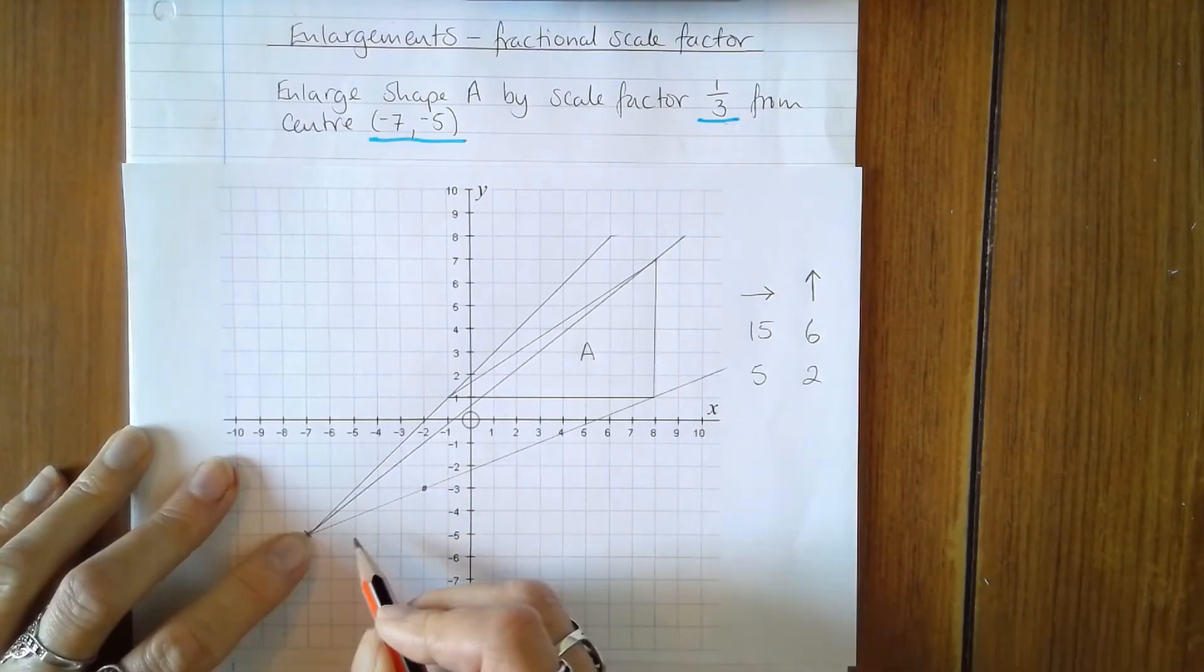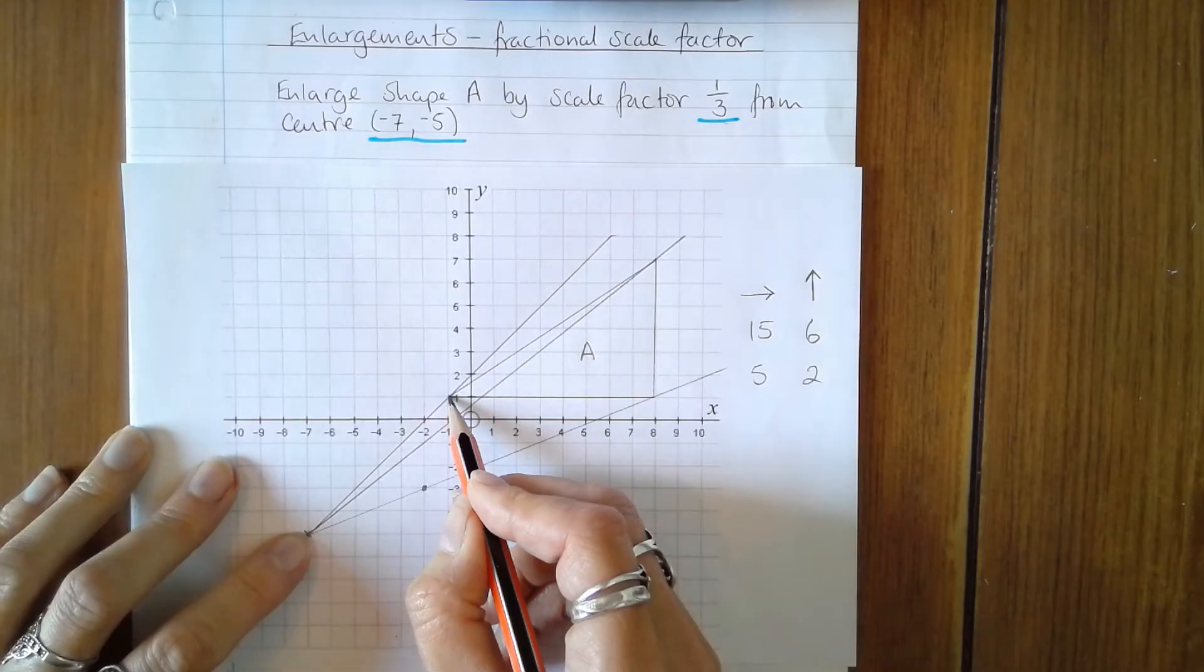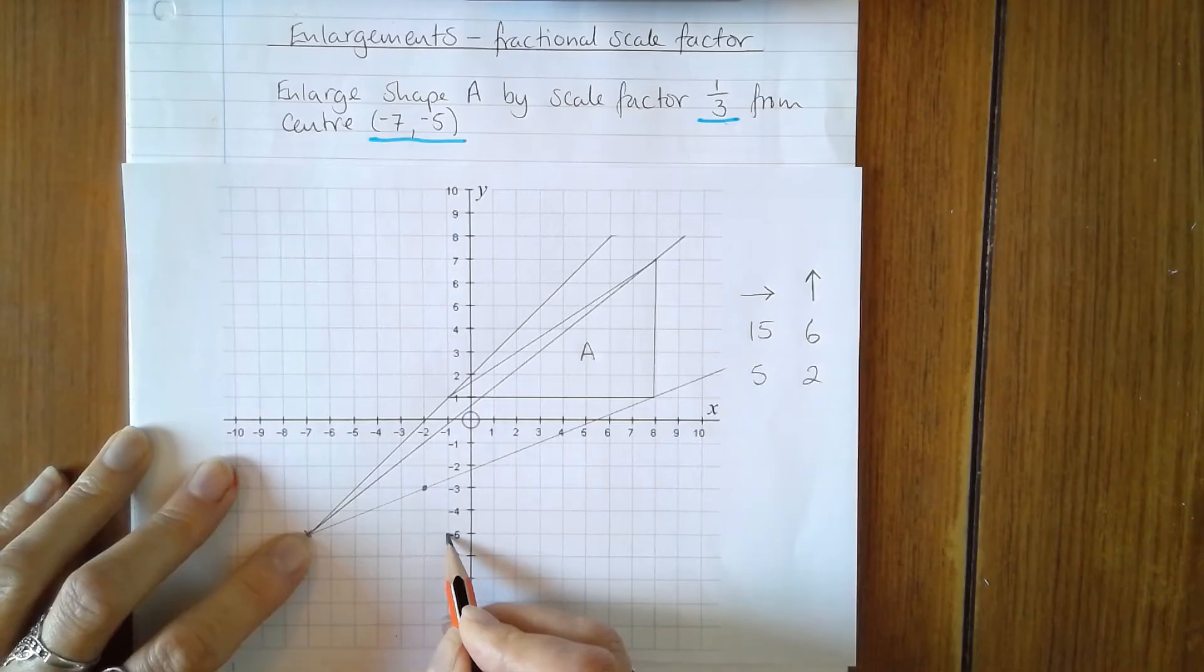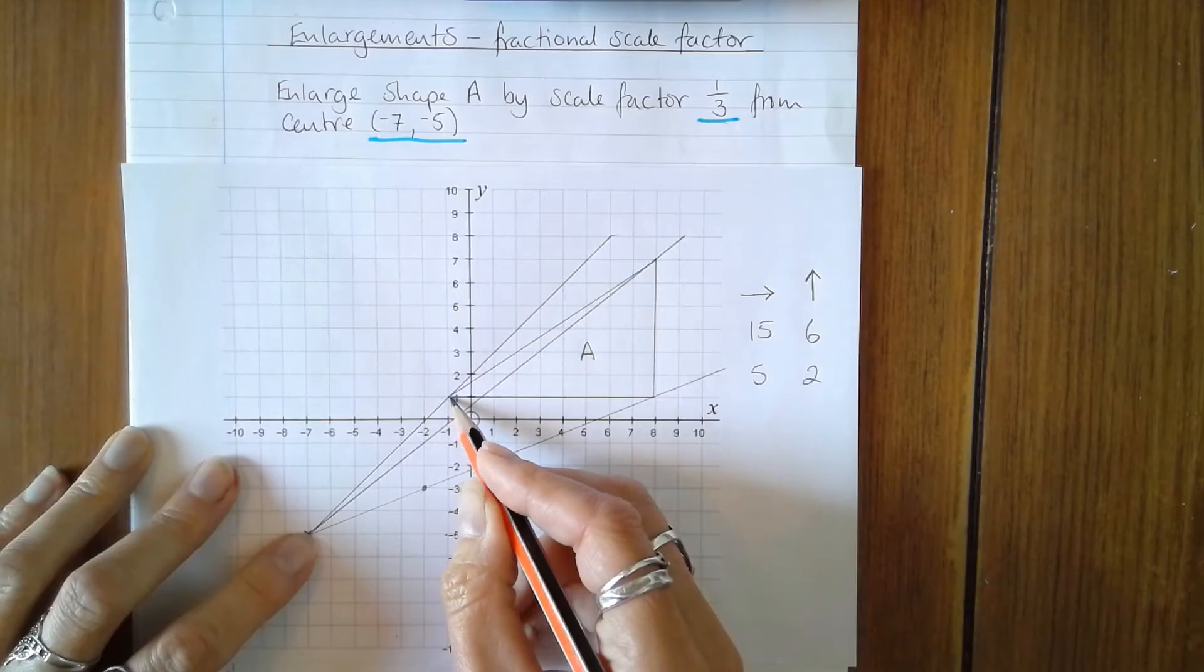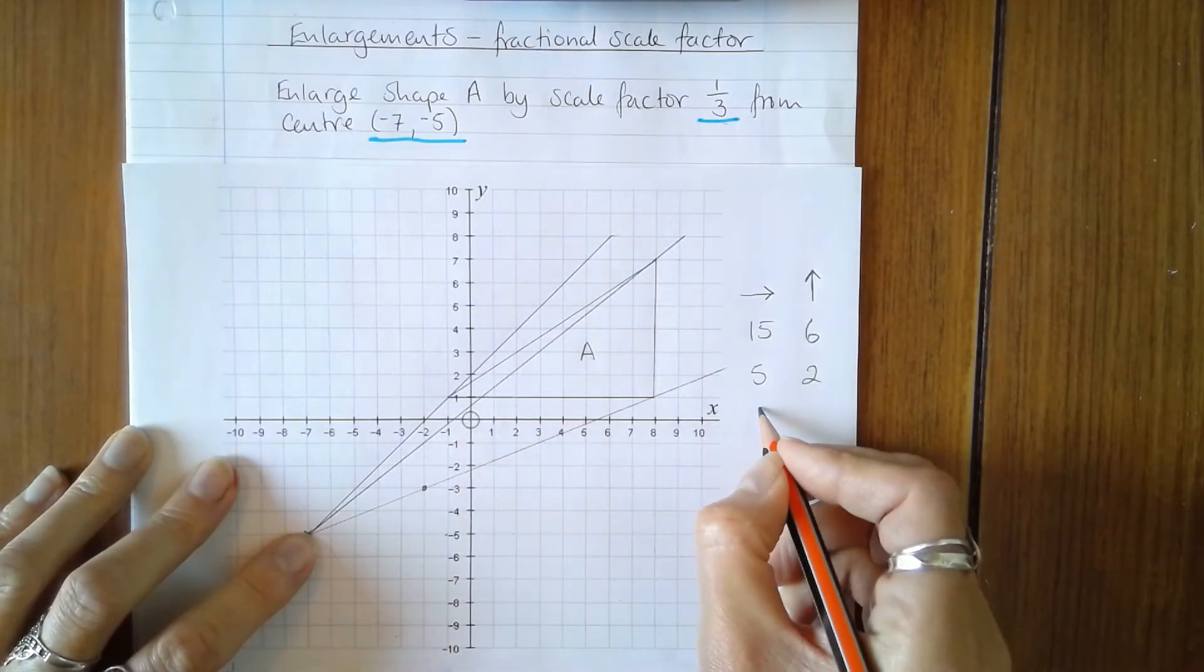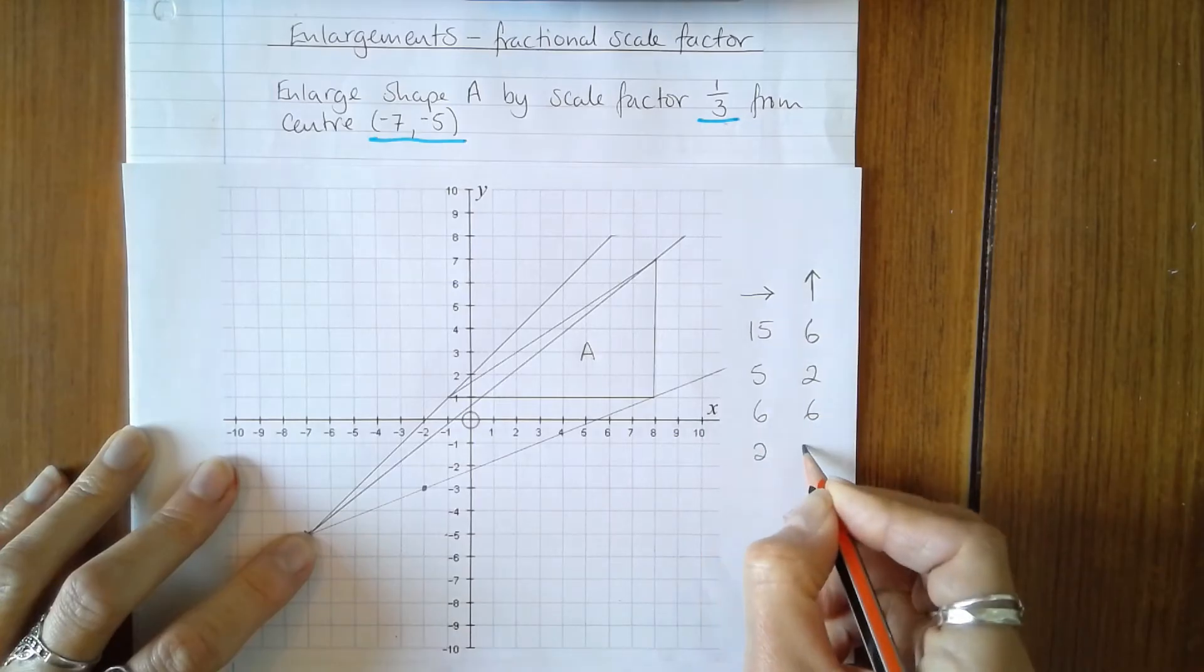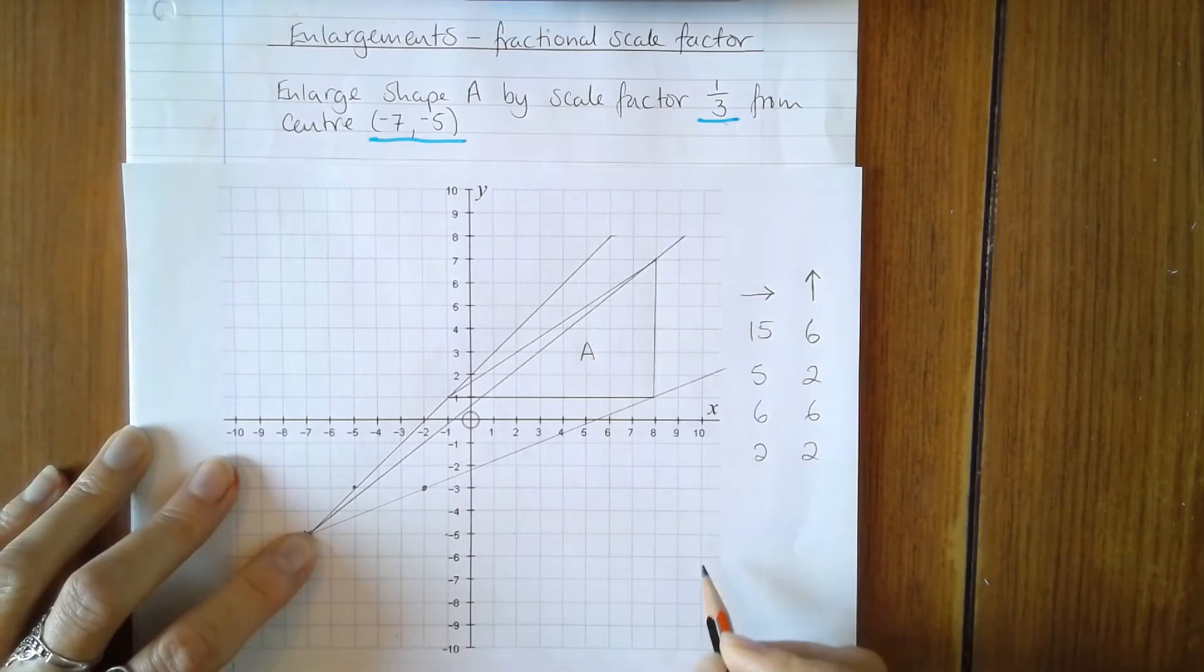The second vertex here is 6, 6, 6 across and 6 up. So 6 across and 6 up becomes 2 across and 2 up when I divide by 3. And that means the new vertex is here, also on the grid line.